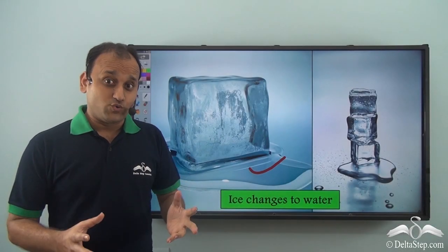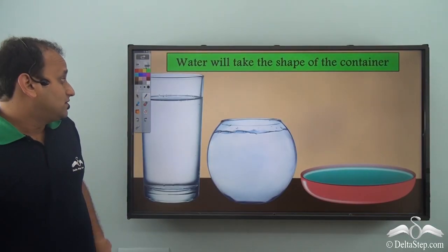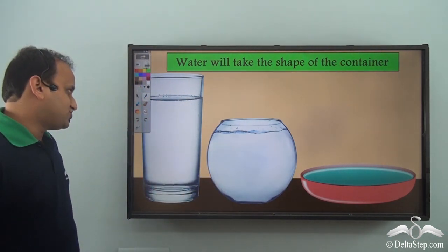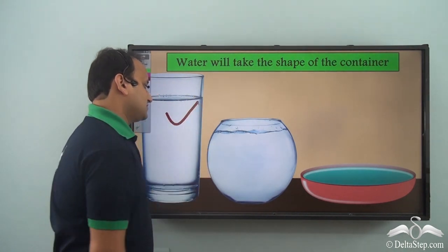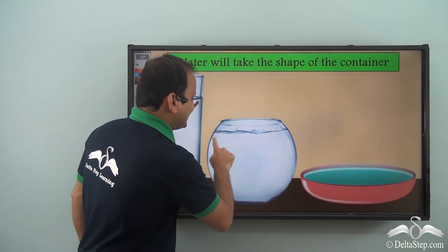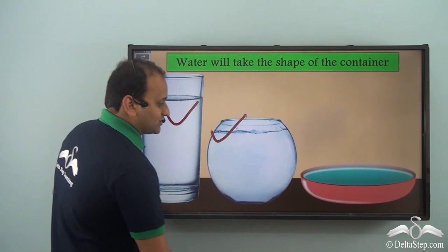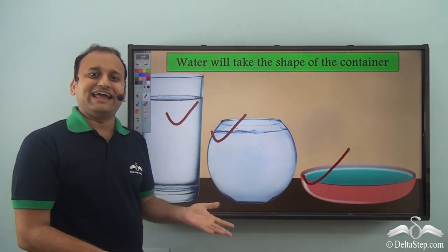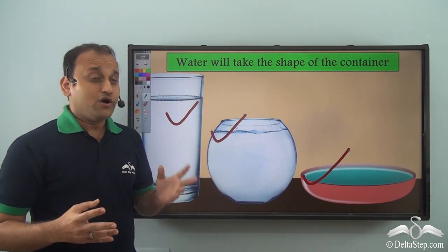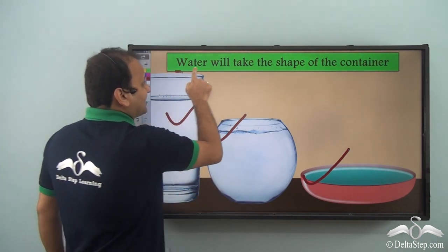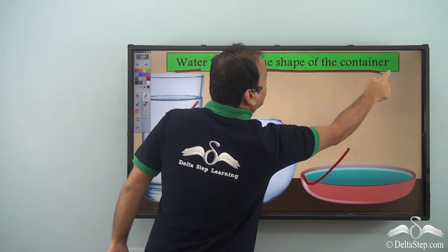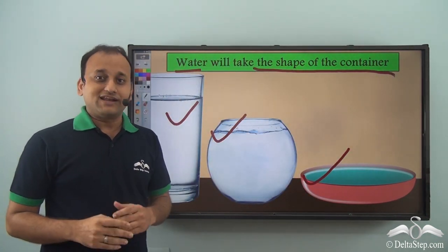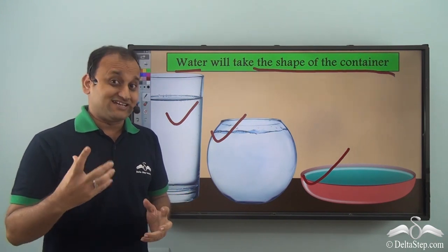Now this water can be stored in any sort of container. For example, you can store it in a glass, in a bowl, or in a plate, and wherever you store it, it will take the shape of that container. So water will take the shape of the container — it has no real shape of its own. That is, it cannot hold its shape just like the ice.